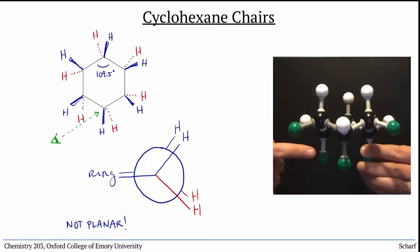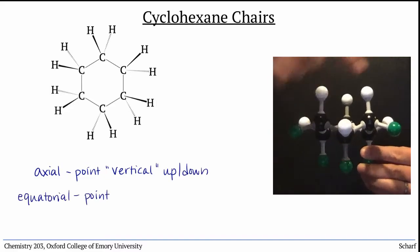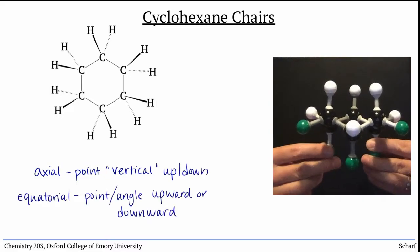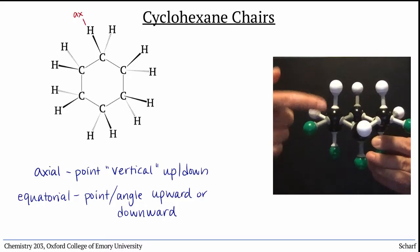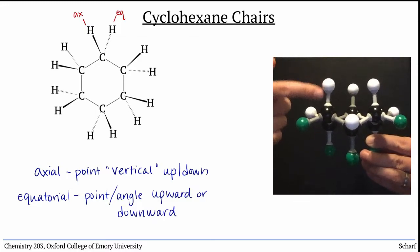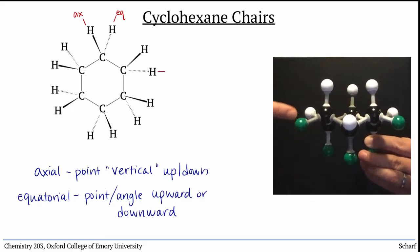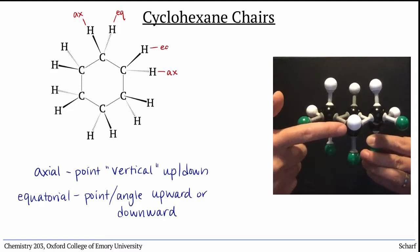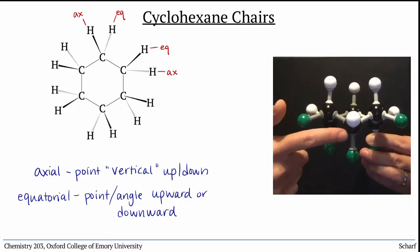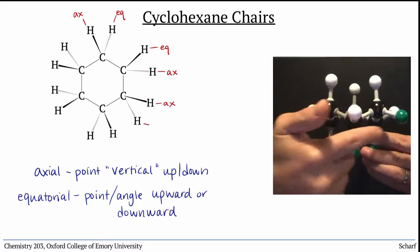We say that the vertical pointing substituents are axial and the sideways substituents are equatorial, and their directions alternate as we go around the ring. This carbon has its axial substituent pointed up and its equatorial substituent pointed downward. The next carbon over has its axial substituent pointed down and its equatorial substituent angled upward, and so on around the ring.